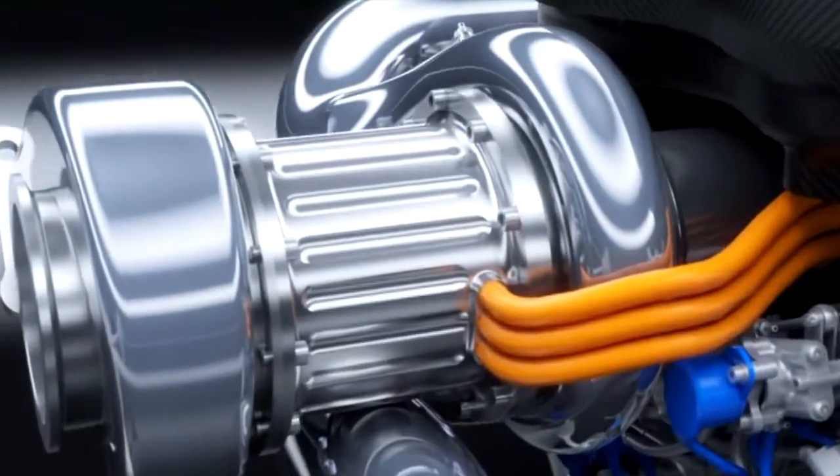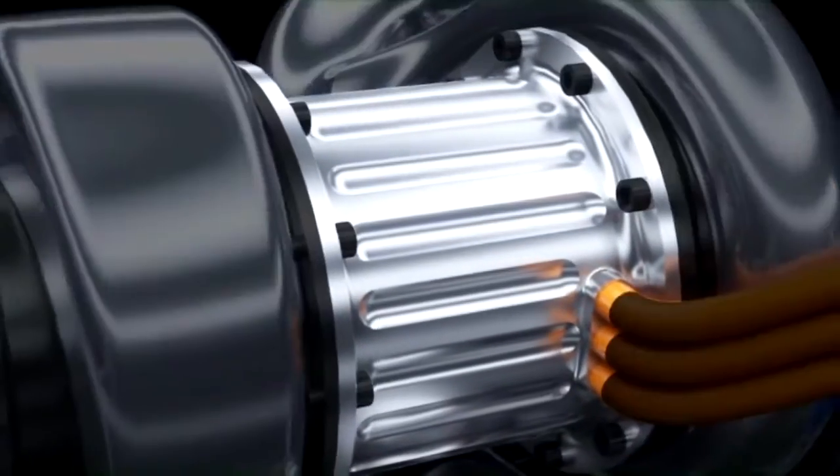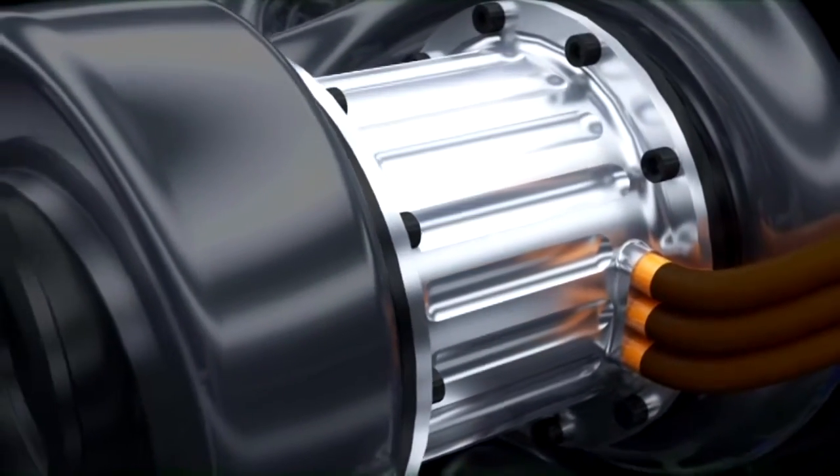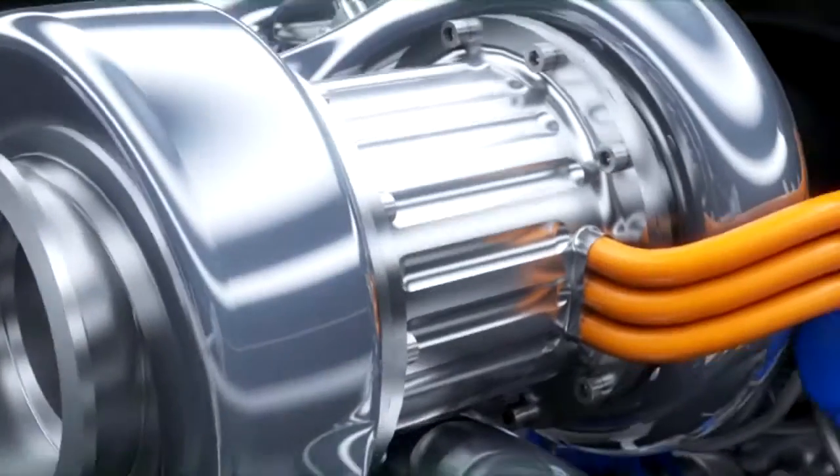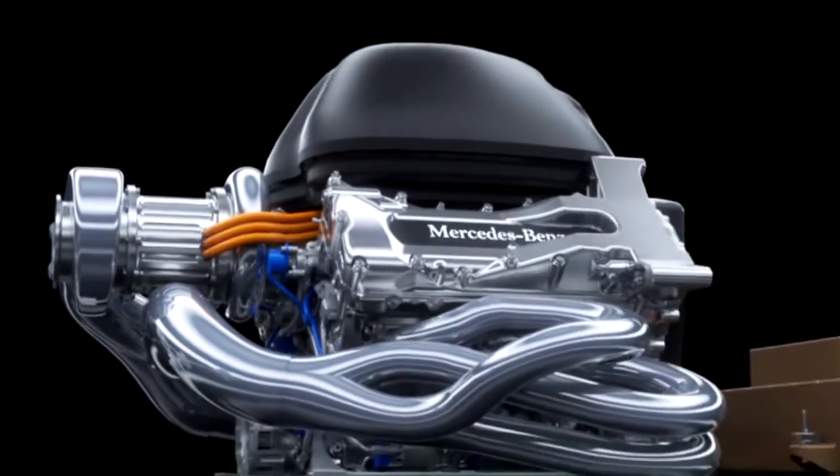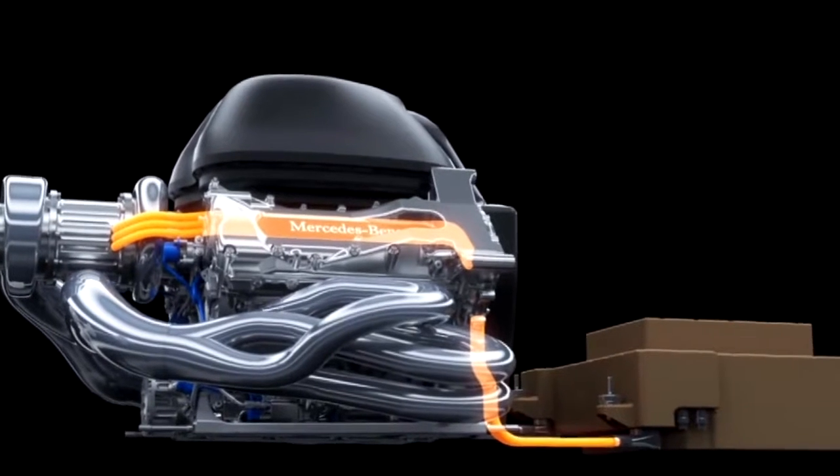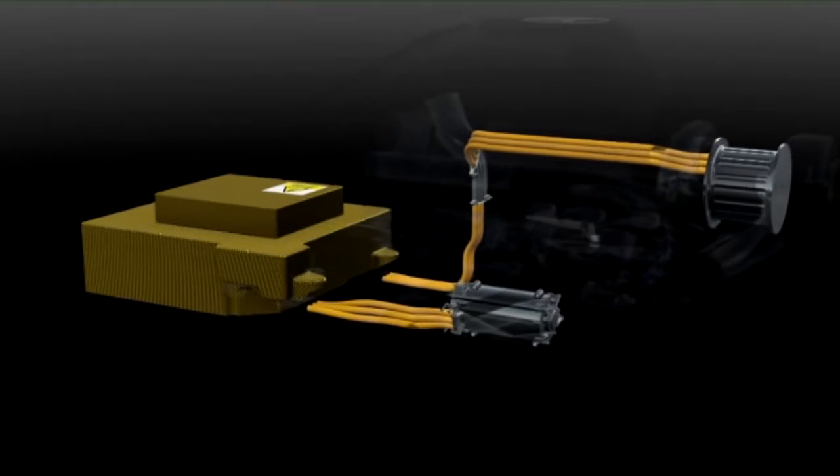The second motor generator unit, the MGU-H, harvests the turbo energy. As a motor, it spins up the compressor to eliminate turbo lag, but it can also send energy directly to the other electric machine and vice versa for maximum efficiency.